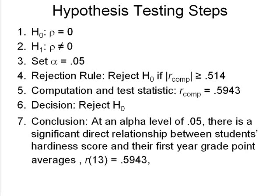In APA format, it says if you have a number that can never go over 1 — and our R scores can never go over 1, they can never be greater than 1, neither can probabilities, neither can alphas — if they can't be greater than 1, you don't put a leading zero. So our slope would have a 0 in front of it if it was less than 1, because slopes can be greater. Our intercept too, because intercepts can be greater than 1. But R scores, correlations, and probabilities — none of those would have the leading zero.